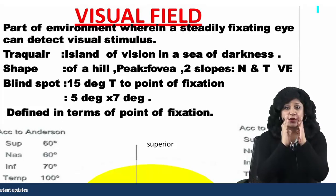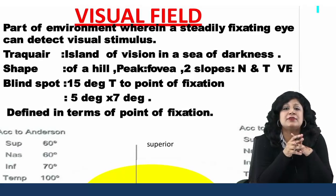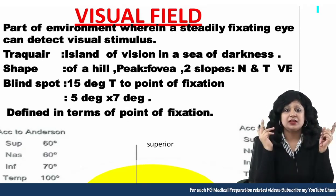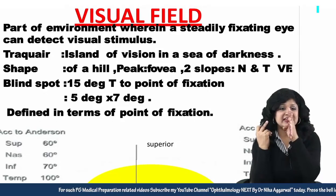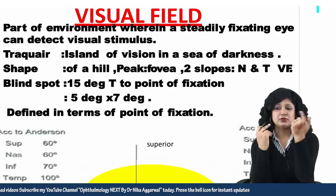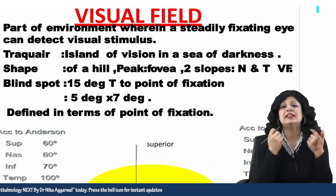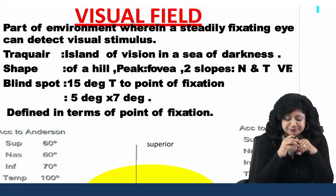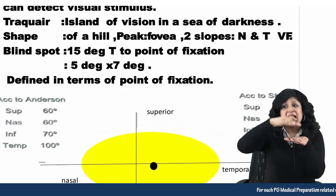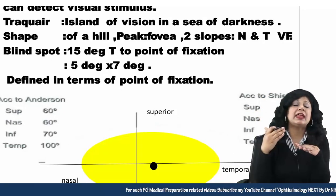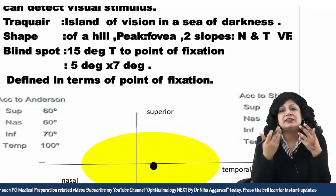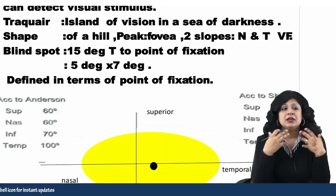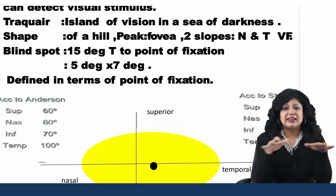When you are fixating straight ahead, when you are in central fixation, what are the things that you are going to see in your space? That part of the environment where steadily fixating eyes are seeing straight ahead — what you are able to see — is actually called the visual field. Then there is a thing called the traquire, which is actually the island of vision, a hill of vision in a sea of darkness.